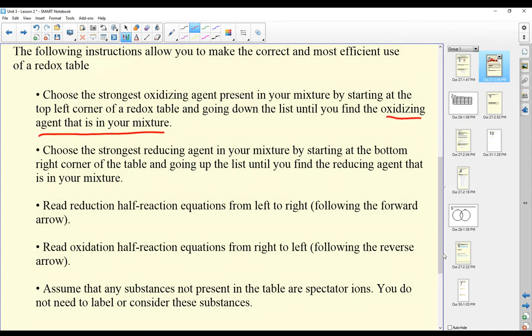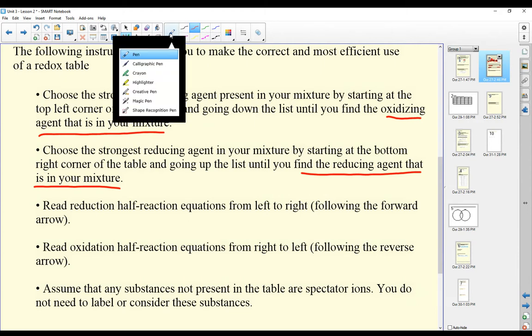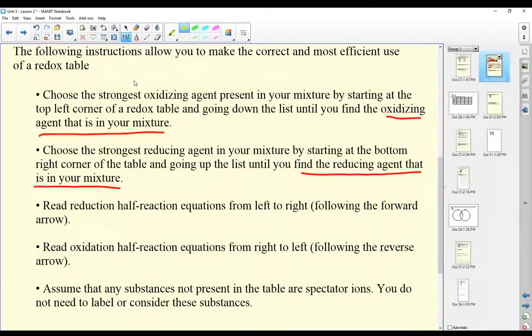Choose the strongest reducing agent in your mixture by starting at the bottom right corner of the table and going up the list until you find the reducing agent. Read reduction half-reaction equations from left to right following the forward arrow. Read oxidation half-reaction equations from right to left.